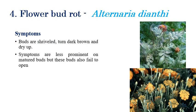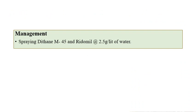Flower bud rot is caused by Alternaria dianthi. As the name suggests, the flowers or buds rot. Initially, buds are shriveled and turn brown in color, then dry up. Prominent symptoms are observed in mature buds, which slowly turn yellow and fail to open, preventing flower production, and eventually fall down. Management includes spraying Dithane M-45 and Ridomil at 2.5 liters per hectare.